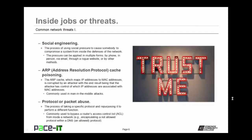Then there is social engineering. This is the process of using social pressure to cause somebody to compromise the system from inside the defenses of the network. Social engineering pressure can be applied in multiple forms. An employee can receive a phone call from somebody claiming to be from the IT department asking for their credentials. It may occur in person, through email, or through a rogue website. There are many avenues in which social engineering can occur. The best defense is through end user education and training your end users to resist social engineering.